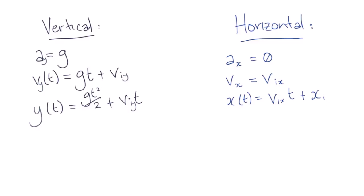As previously, if we're finding displacement from an initial position of zero, then this term will be zero, and our horizontal displacement will just be equal to the initial horizontal velocity times time. We now have all the equations that fully describe projectile motion.